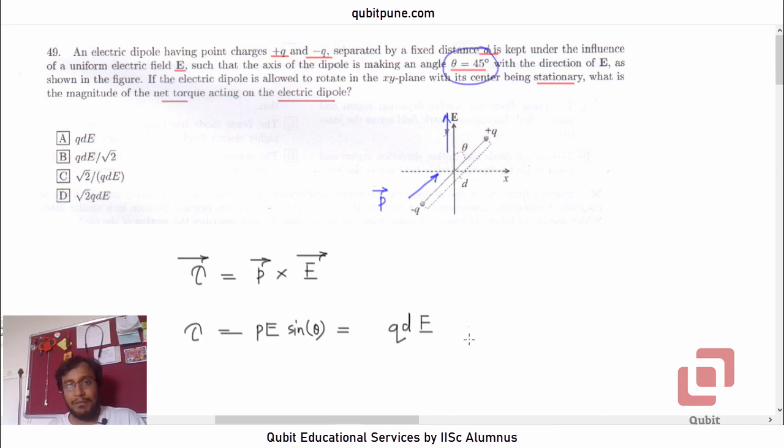And it's making an angle of 45 degrees. So this will be sine 45. And that is QDE by root 2. And that is option B.